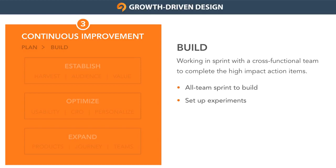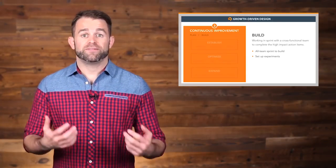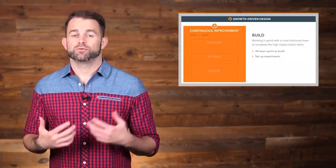The goal of the build step is to host a working sprint with a cross-functional team to complete all of those high-impact action items. Just like a sports team, your team will swarm on any of the action items to collaboratively tackle them with aggression. They'll be in sync with schedules, meetings, and work times. In addition to building those action items, the team will also need to set up experiments as outlined in the experimental design, in order to properly measure the impact those actions have and either validate or invalidate your original hypothesis.